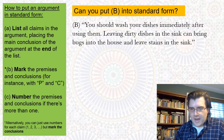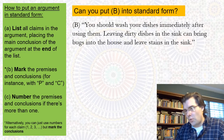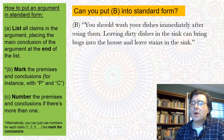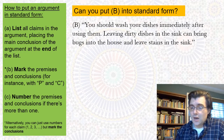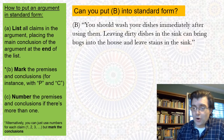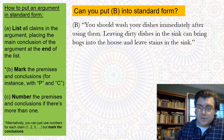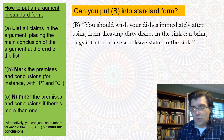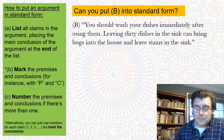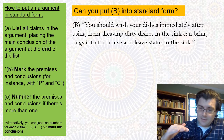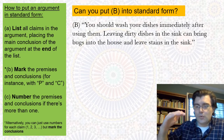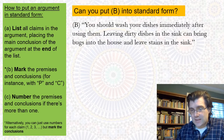Let's practice this a little bit. In a moment I'll ask you to pause the slide and put argument B into standard form. What you want to do is identify all the claims in the passage and list the supporting claims above the supported claims — list the premises above the conclusions they support. There's just one conclusion in this argument, so put it at the bottom labeled C, and put the other claims above it labeled as premises.